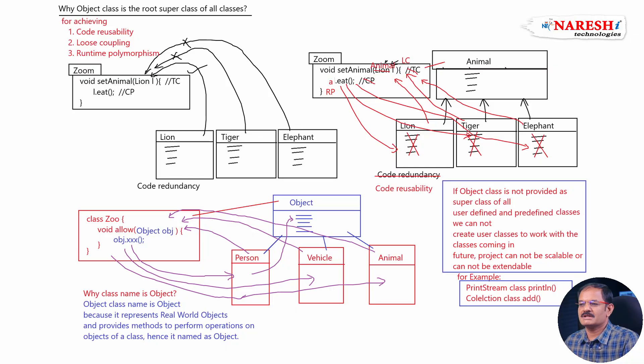Come to the screen. Why object class is super class of all classes? For achieving code usability, loose coupling, and runtime polymorphism. In this session let us understand why the class name is object. Why object class name is object? Why not some other name?